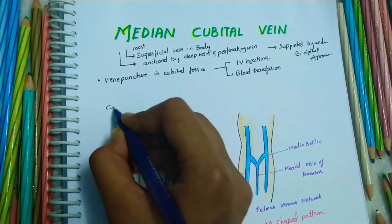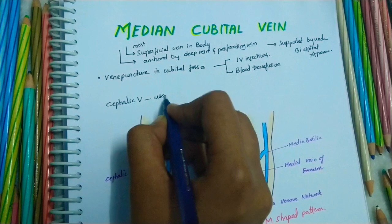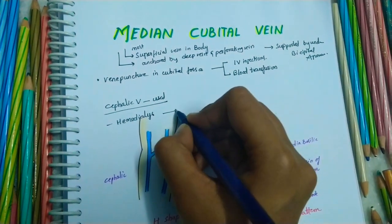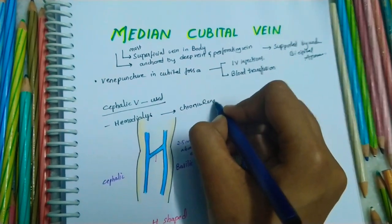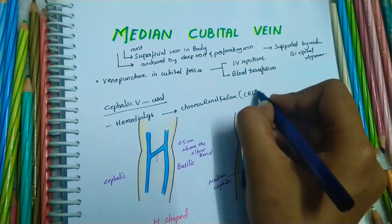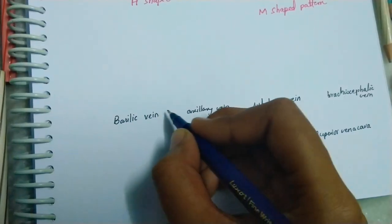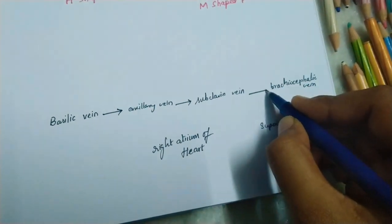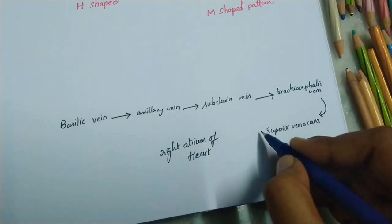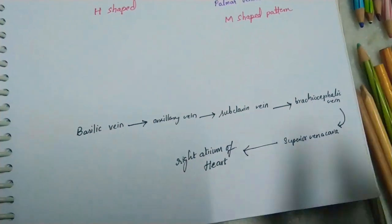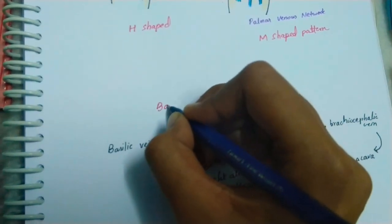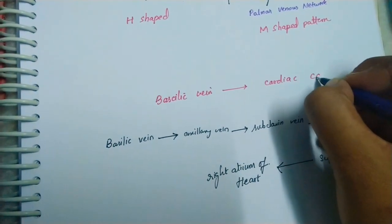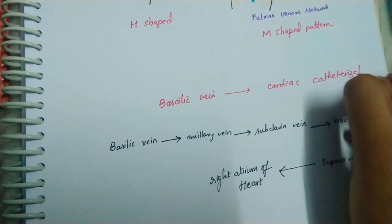Coming to the cephalic vein, it is mainly preferred for hemodialysis in chronic renal failure (CRF). From the basilic vein, blood goes into the axillary vein, to the subclavian vein, to the brachiocephalic vein, to the superior vena cava and the right atrium of the heart. This process is mainly done using the basilic vein, and this technique is called cardiac catheterization.